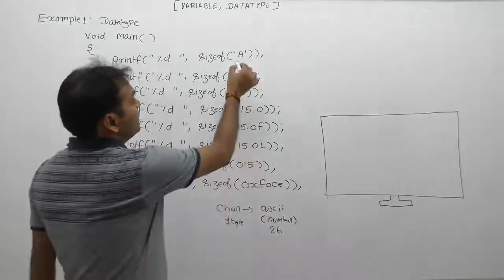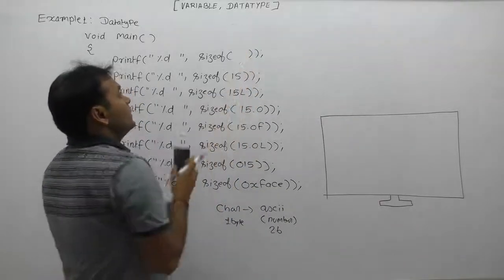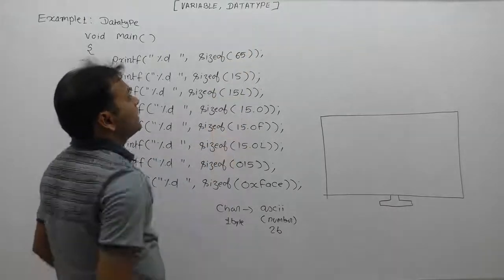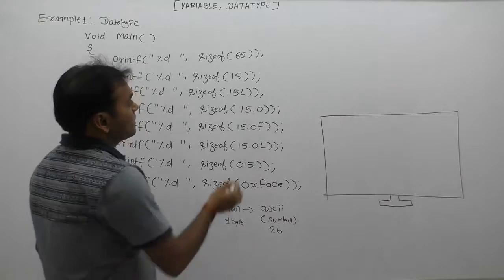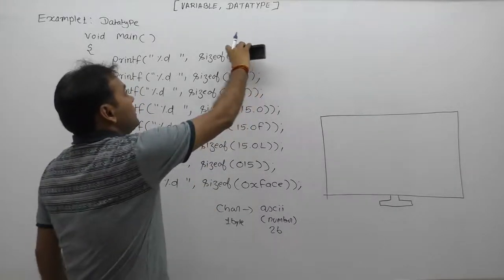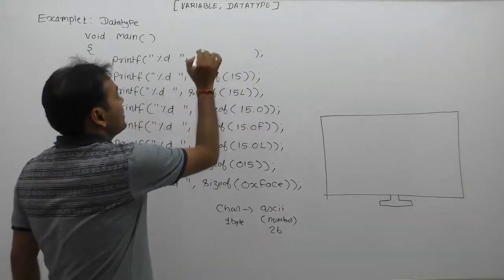In this case, 'a' is logically replaced by the ASCII value of 'a', which is 65. And according to 65, 65 is a number, therefore the sizeof operator will return the size of 65, which takes 2 bytes.